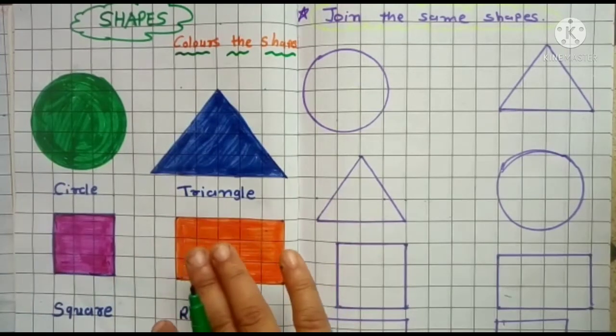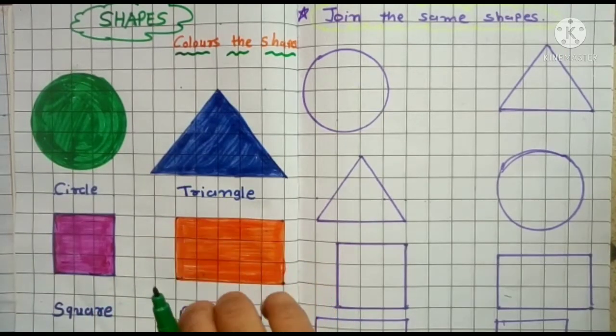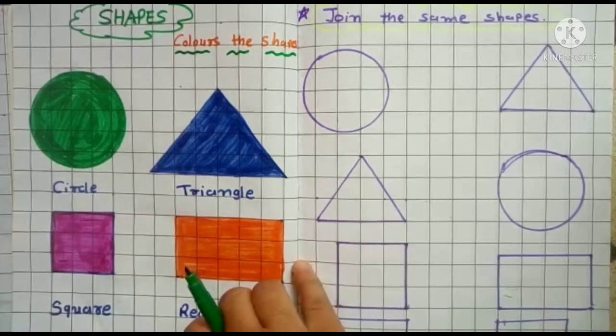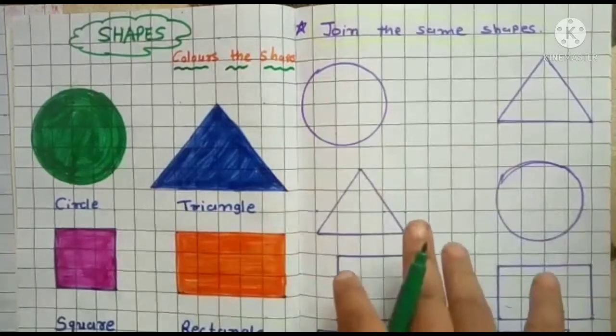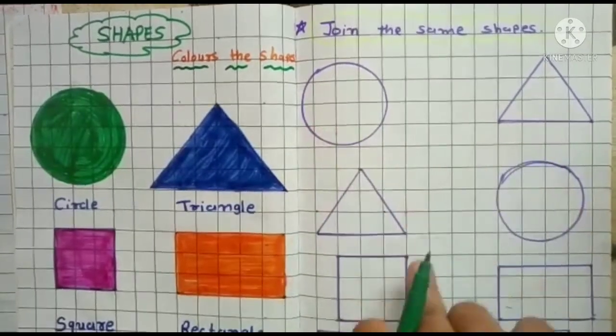Yes. You understand? Yes. Okay, next. Look children. Here is the circle. Triangle, square and rectangle.